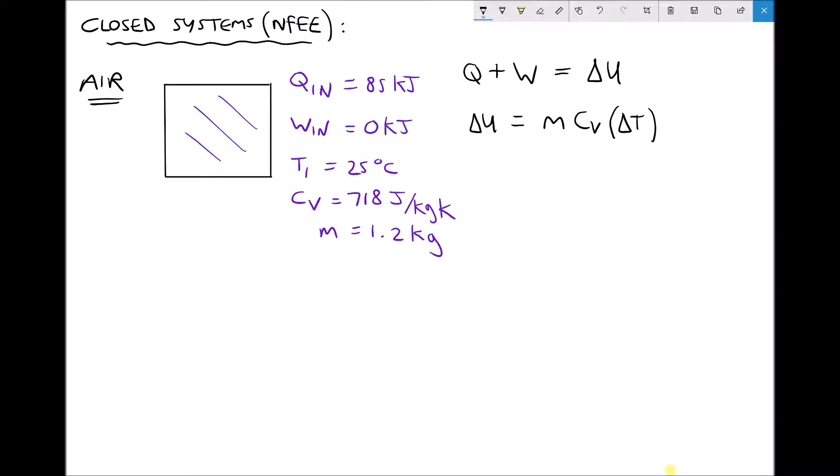We're going to use the non-flow energy equation on the right hand side: Q plus W equals delta U. In previous videos we discussed a convention whereby Q in or W in was positive and Q out or W out was negative.